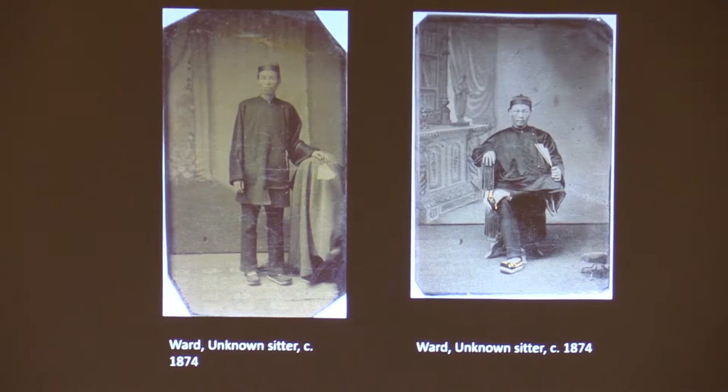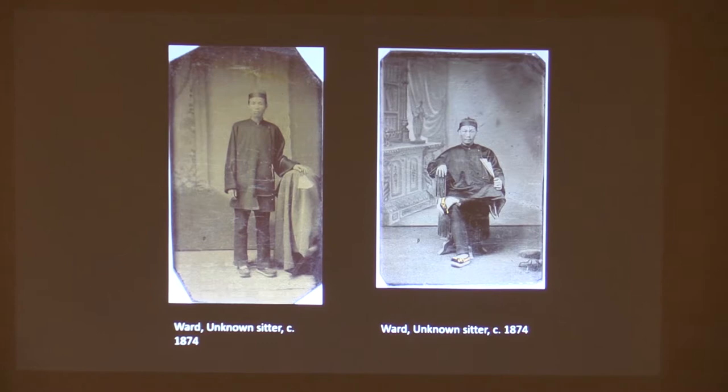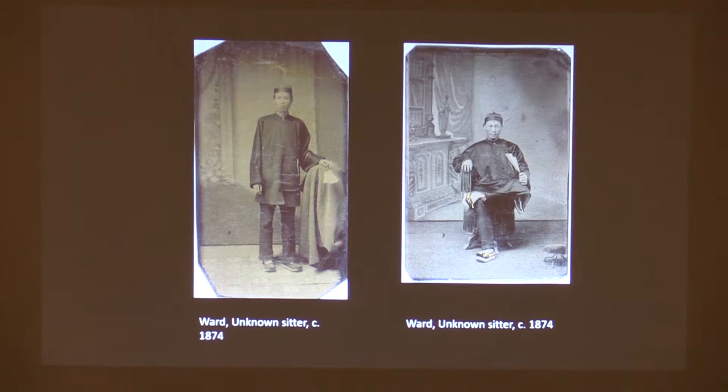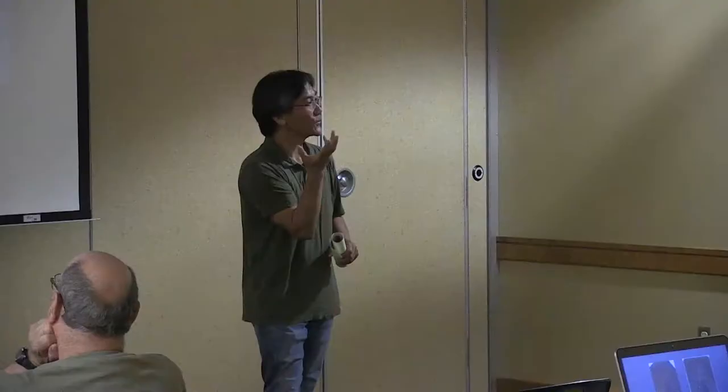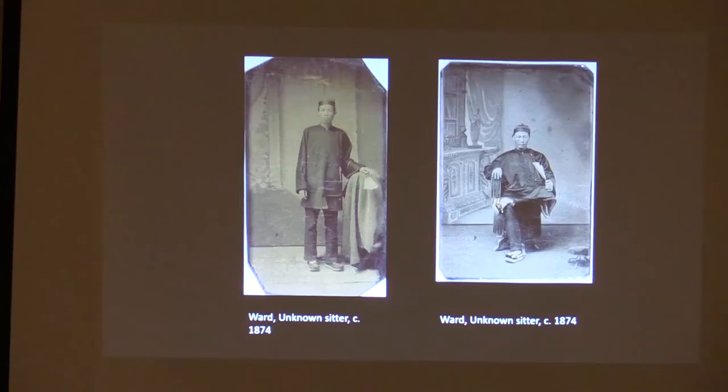We can imagine the letters they were getting from home. For those men who could read, mom and dad are saying: where's the money? How come the money isn't coming back across the Pacific Ocean to feed the family? And we can imagine son writing in a very coded fashion: 'I just spent it on a photograph.' So let's flip the equation a little bit. We've been talking about that famous photograph of men against the south wall as visual evidence of a factory owner's enthusiasm. But what did photography mean to these men?